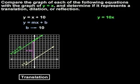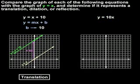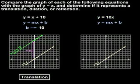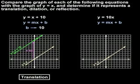To compare the graph of y equals 10x with the graph of y equals x, let's start with the graph of y equals x, which is a diagonal line that passes through the origin. Next, to graph y equals 10x, we use the formula y equals mx plus b, where m represents the slope of the line and b represents the y-intercept.